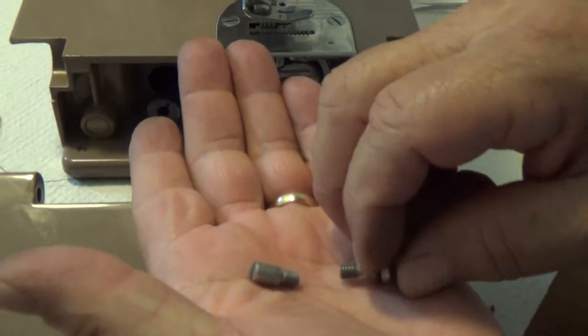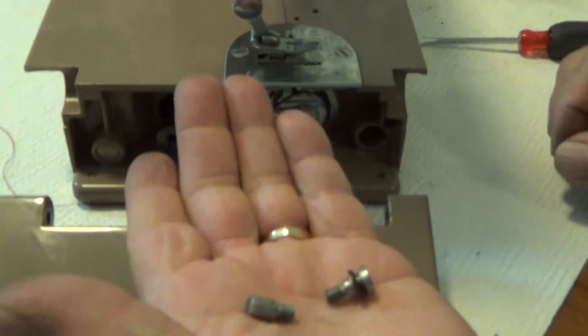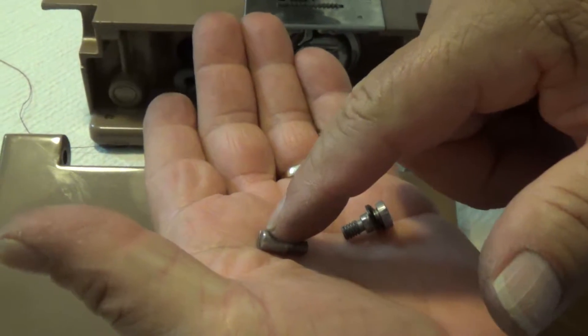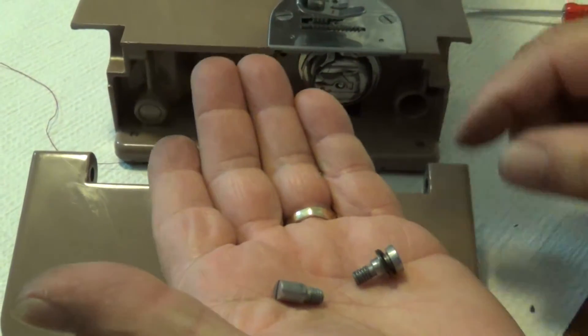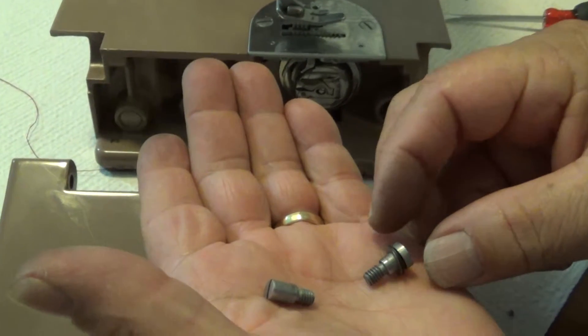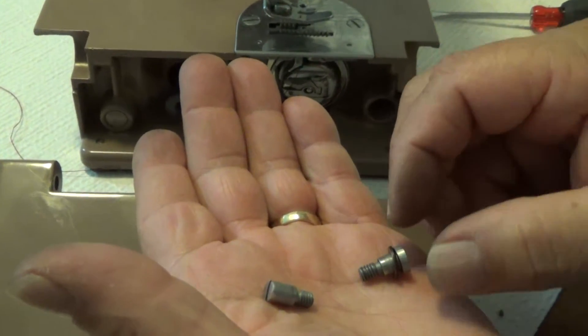There are two different screws that we're going to use. This one is going to go on the back side and this is going to go on the front side. Notice that this has washers on there, so make sure you don't lose the washers.